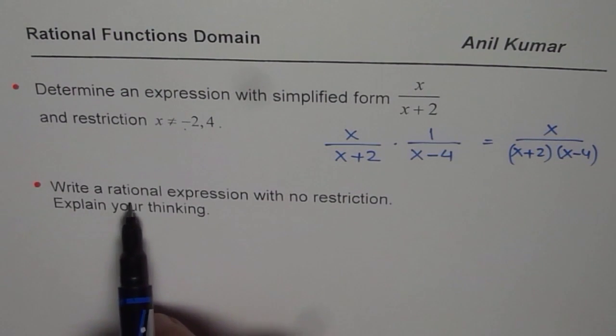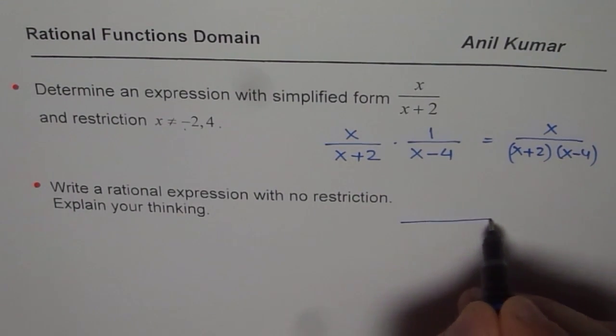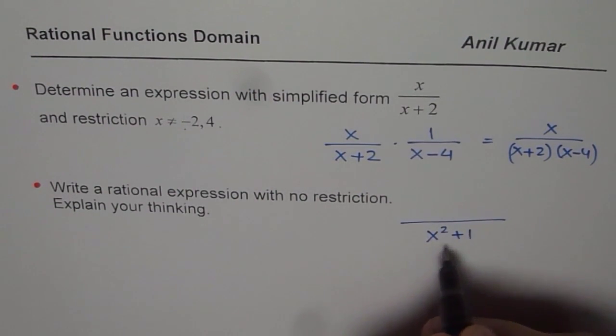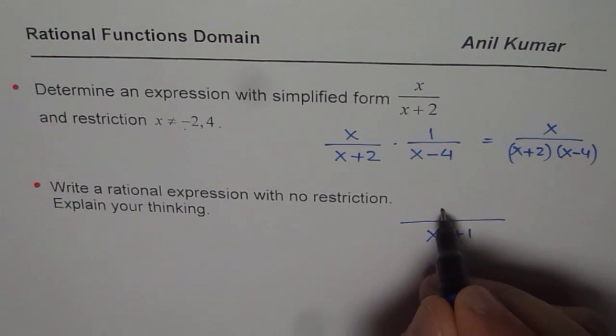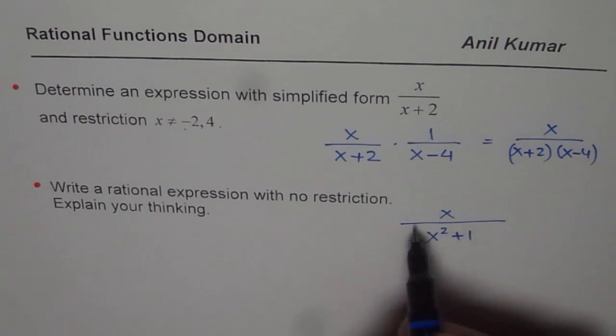Second one, write a rational expression with no restriction. No restriction means the denominator cannot be 0, right? And there are many situations. If I write x square plus 1, there is no restriction. I can write anything in the numerator. You get the idea, right? So, that is an example with no restriction.